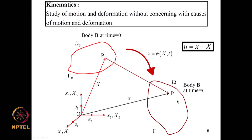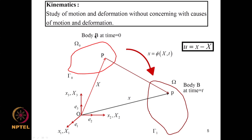After reviewing qualitative features of non-linear system response and how it differs from linear system response, we started talking about elements of continuum mechanics. I briefly started talking about kinematics — the study of motion and deformation without concerning the causes. We have a configuration at time equal to 0 as the reference configuration described in a Cartesian coordinate system in which the position of material points in the body are described.